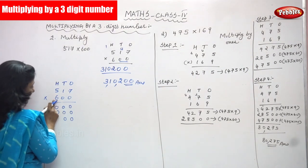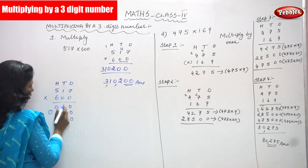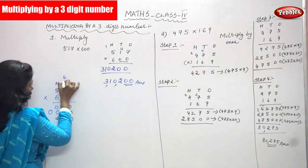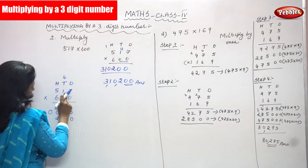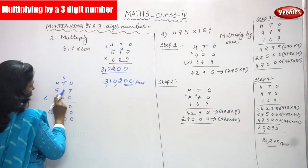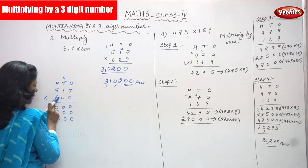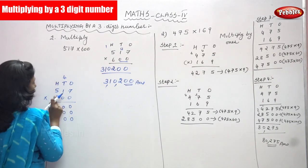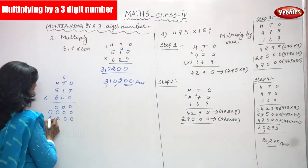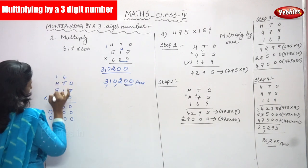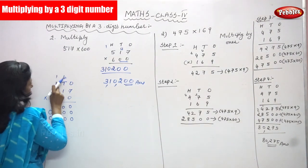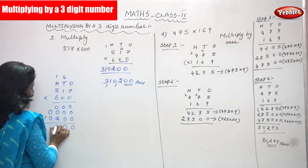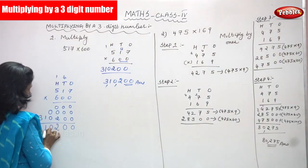I am going to multiply 6 by 517. 6 sevens are 42 — it is the 100's place, write 2, and 4 is the carryover. Carryover goes to the next place. 6 ones are 6; 6 plus 4 is 10, write 0, carryover 1. Then 6 fives are 30, 30 plus 1 is 31. So the result is 3, 1, 0, 2 — with the two zero rows, giving 0, 0, 2, 0, 1, 31.